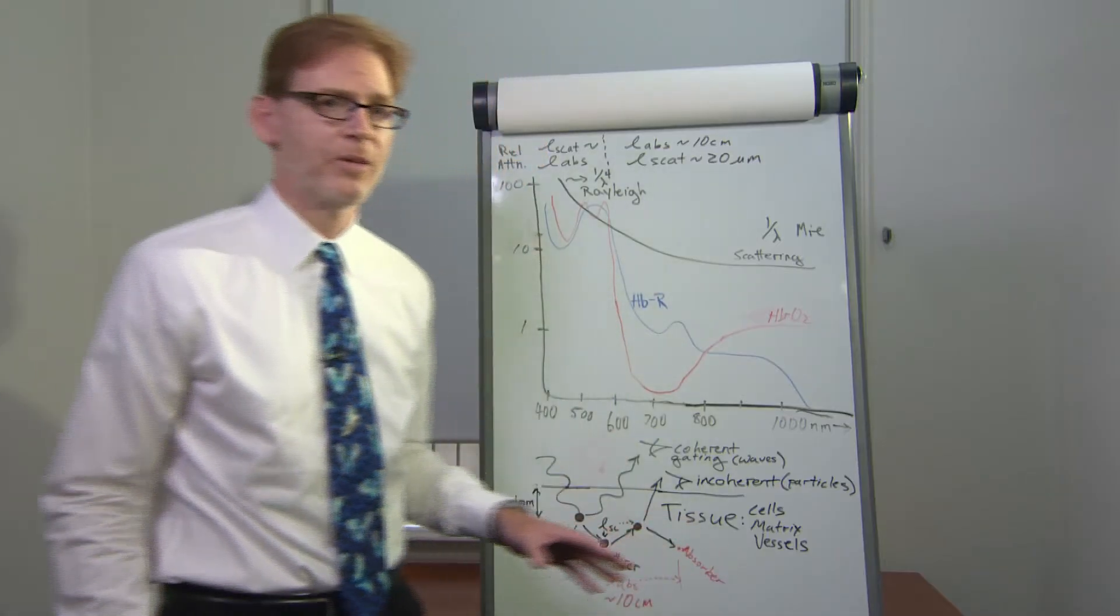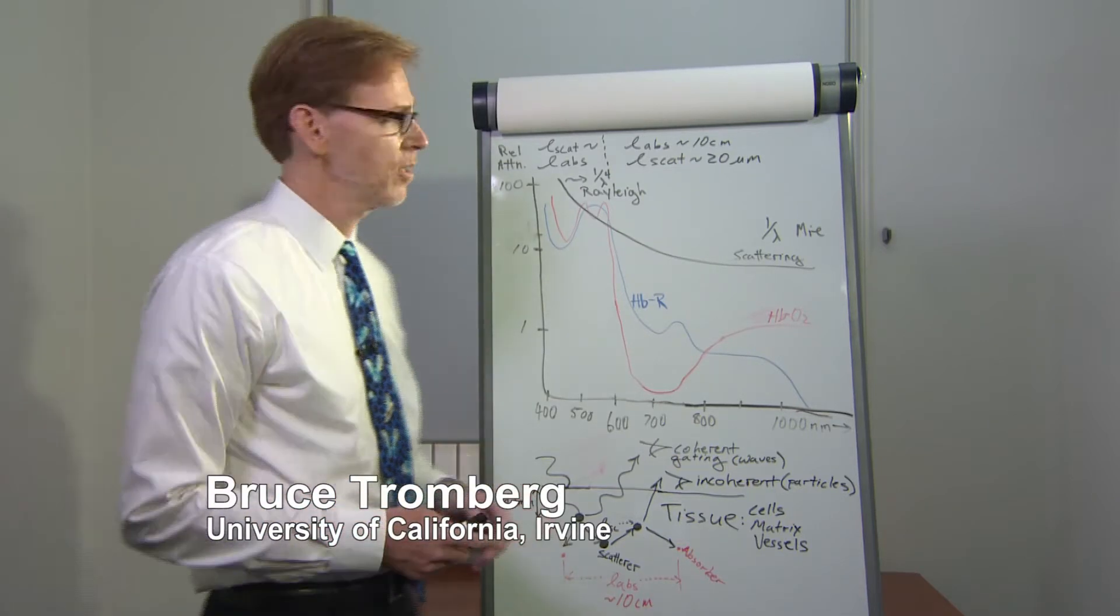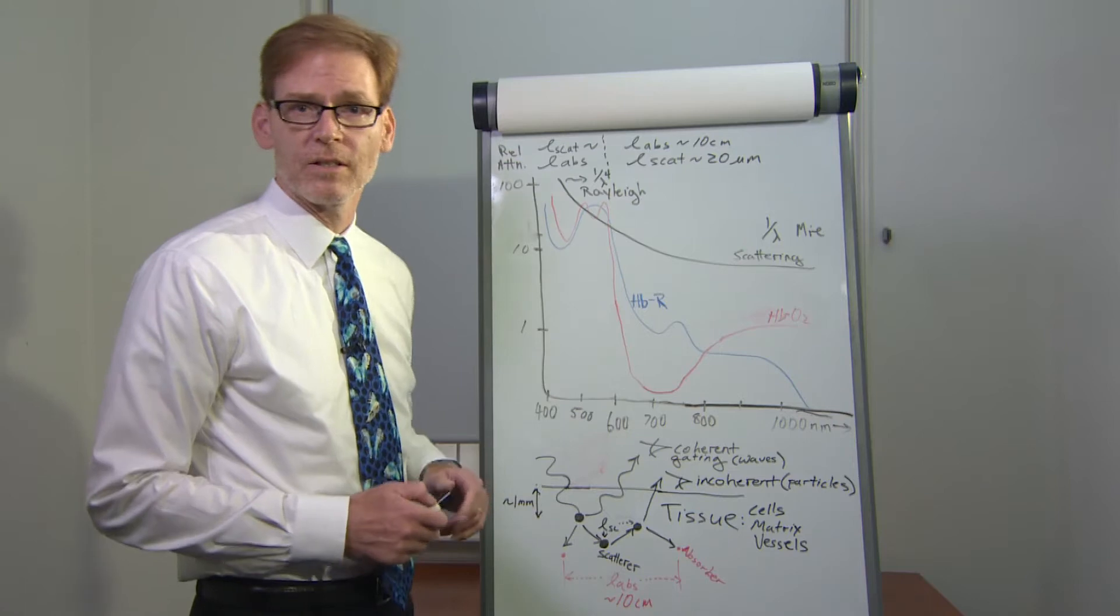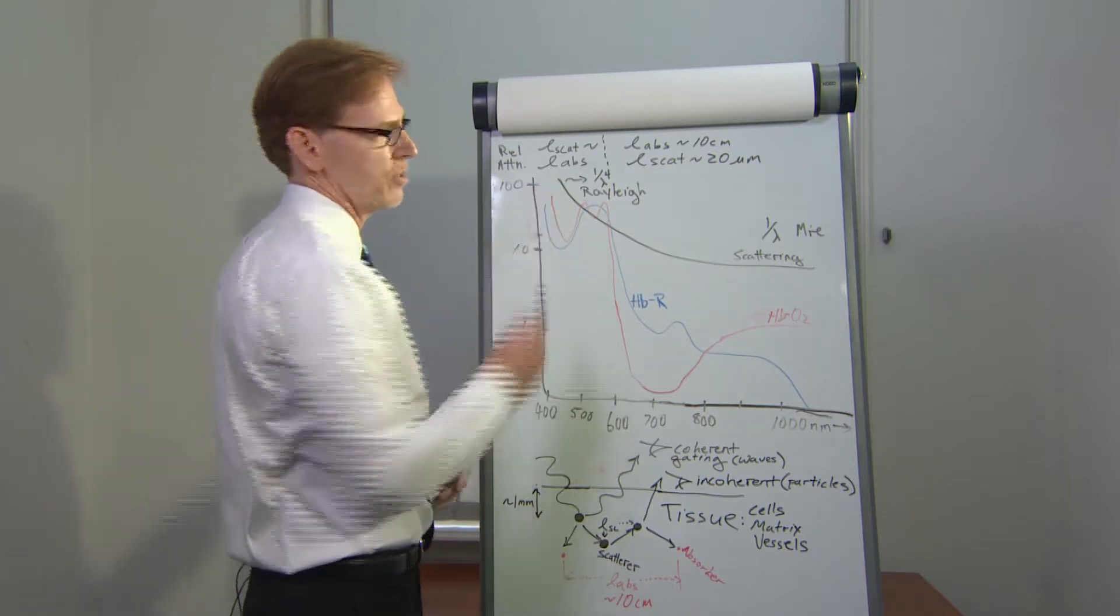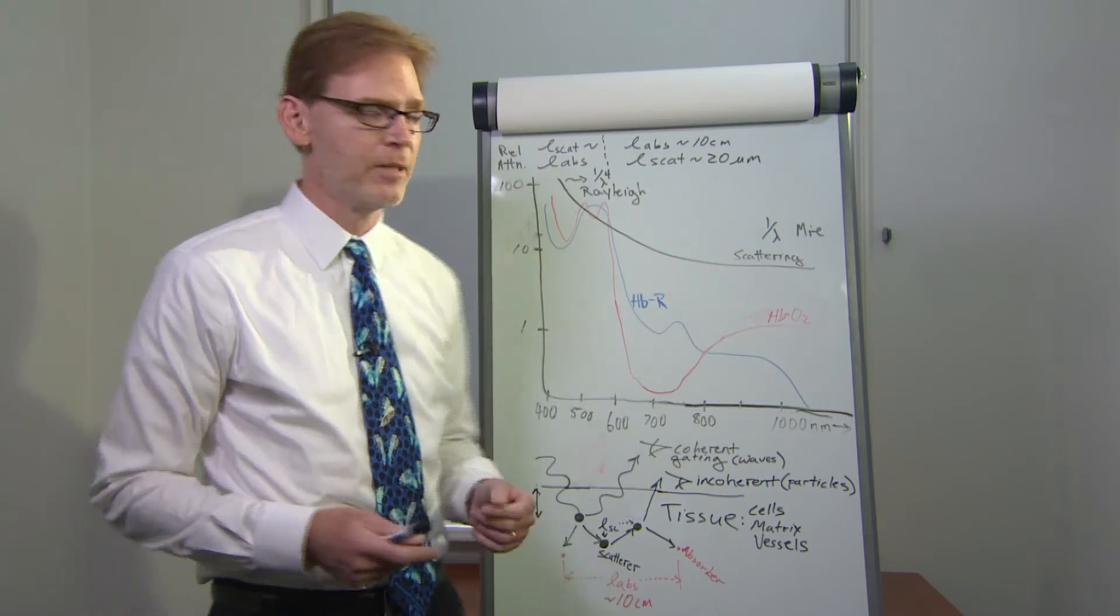To see beneath the surface of tissue, we have to understand the fundamental light interaction mechanisms with tissue. There are two processes that can occur. Light absorption, which is attenuation by molecules within the tissue. The dominant ones are hemoglobin, water, and lipid.